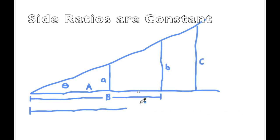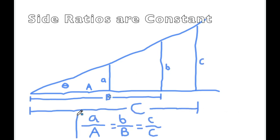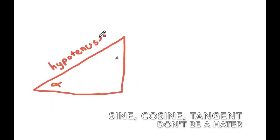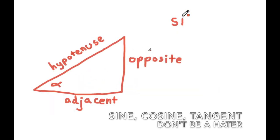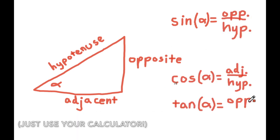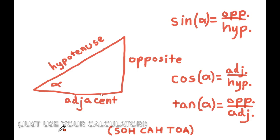For any angle, side ratios are constant. Sine, cosine, tangent — don't be a hater. You can look them up in a book or just use a calculator.